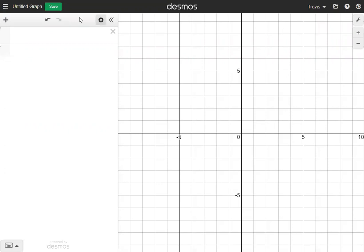What I'm going to do first is go to the top left where it says plus and add an item and choose table. And then in box one, you'll see this table where all the x values go on the left side and all the y values go on the right side.